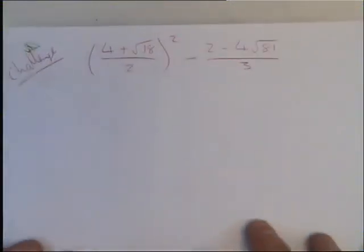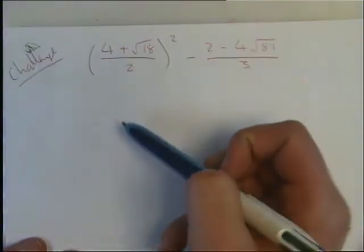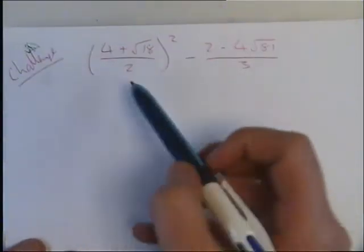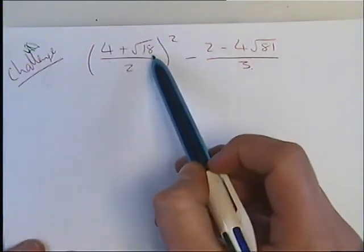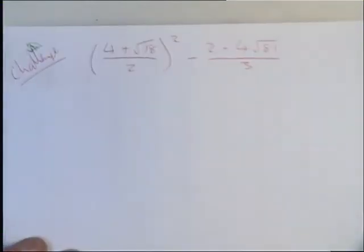Final question, looking at challenge one, we've got a little bit of a mixture of everything. So we've got our fractions, we've got our indices, and we've thrown some surds in as well.